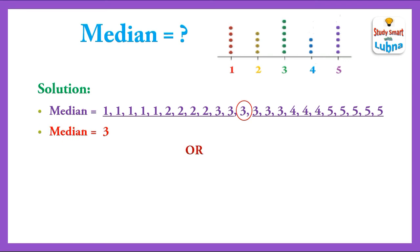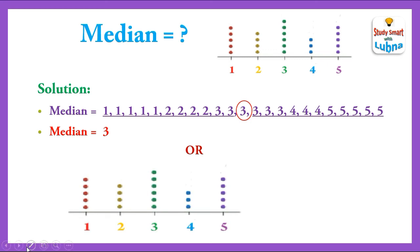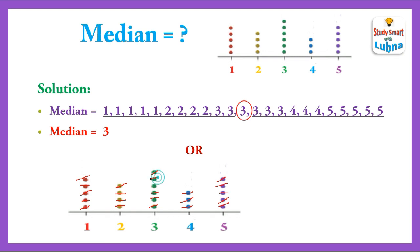There is one more method to find the median using the Dot Plot. We simply start canceling the dots one by one from the left-hand side as well as from the right-hand side. The value which is left at the end is our median. The last dot remaining is on number 3, so the median is 3. Both methods are correct — you can use either to find the median.